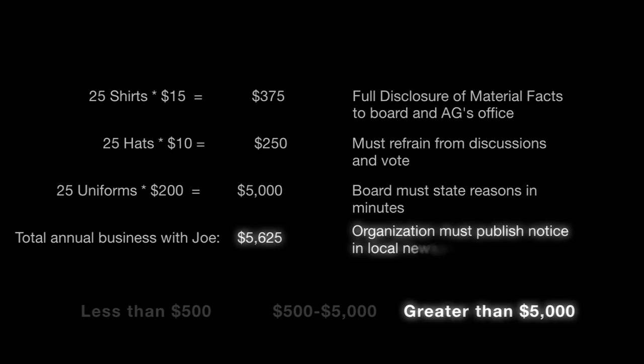The team has a wonderful year and they make it to the Little League World Series. Donations come in, and the Board decides they want to buy the kids matching uniforms — $200 each, shoes, gloves, the works. Back to Joe's. This transaction, at $5,000 alone plus the earlier sales, puts them well over $5,000 for the year. Under the conflict of interest laws, Joe still can't vote, the Board must disclose everything, the Board must record in its minutes why it's making the decision that it is, and now the Board must publish a legal notice in a paper indicating that they're doing more than $5,000 in business with Joe and Joe's Sporting Goods.